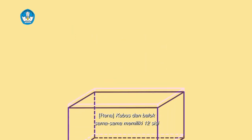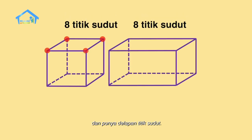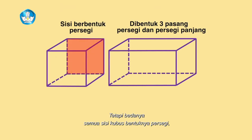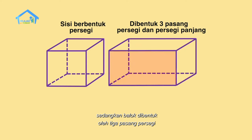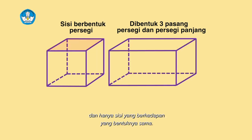Kubus dan balok sama-sama memiliki enam sisi dan punya delapan titik sudut. Tetapi bedanya, semua sisi kubus berbentuk persegi. Sedangkan balok dibentuk oleh tiga pasang persegi atau persegi panjang, dan hanya sisi yang berhadapan yang bentuknya sama. Betul kan bunda?